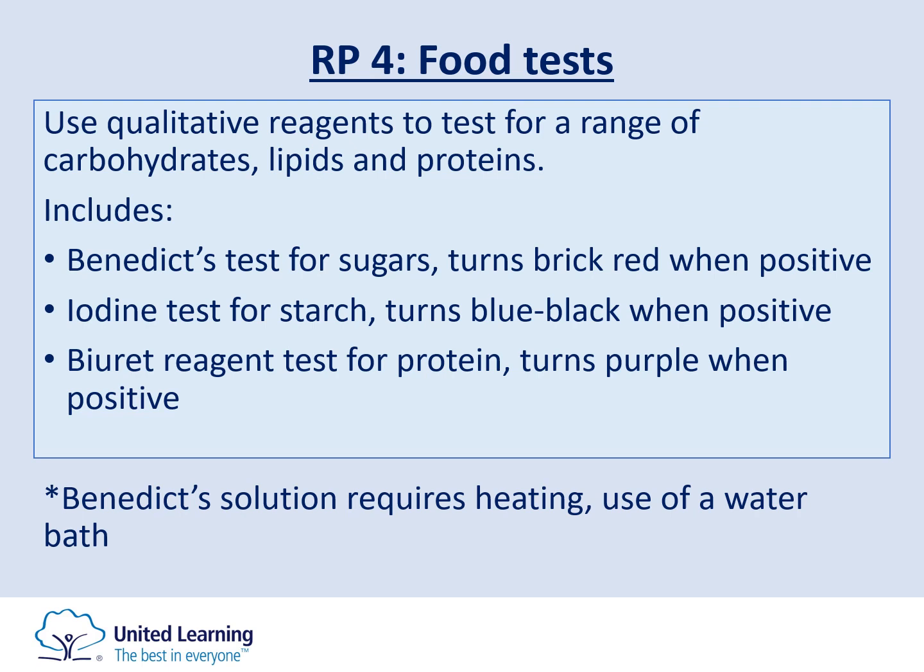The next required practical is the food test practical, where we use qualitative reagents to test for carbohydrates, lipids, and proteins. Qualitative means we observe the colour change rather than getting quantitative numerical data. We use three reagents: Benedict's tests for sugars, iodine tests for starch, and biuret tests for proteins. There is also an ethanol test for lipids — ethanol is a clear substance that turns cloudy when added to lipids, indicating a positive result.